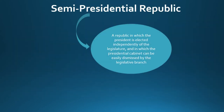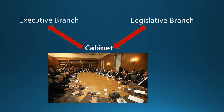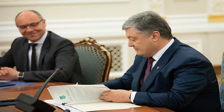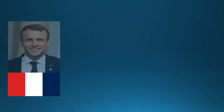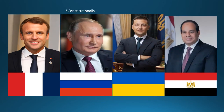A semi-presidential republic is a republic in which the president is elected independently of the legislature, and in which the presidential cabinet can be easily dismissed by the legislative branch. The cabinet is appointed by the president as in the presidential system, but the legislature can remove cabinet members by a simple vote rather than through formal impeachment, giving the legislature much more control over the executive branch. The role of the president differs by country, though the president does have some degree of power. Examples include France, Russia, Ukraine, and Egypt.